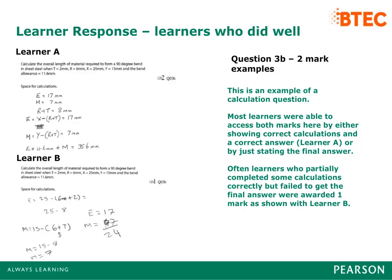This is an example of a calculation question. Most learners were able to access both marks here by either showing correct calculations and a correct answer, as with Learner A, or by just stating the final answer. Learners who partially completed some calculations correctly but failed to get the final answer were awarded one mark, as shown with Learner B.